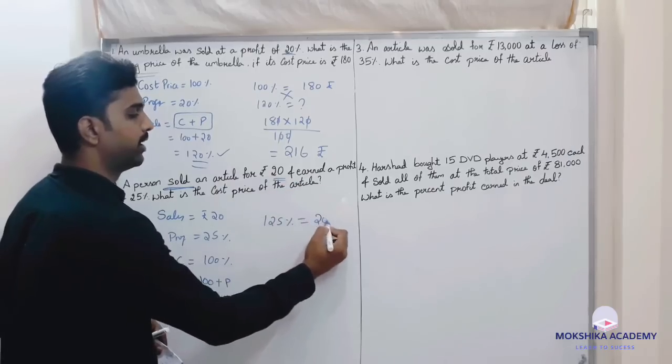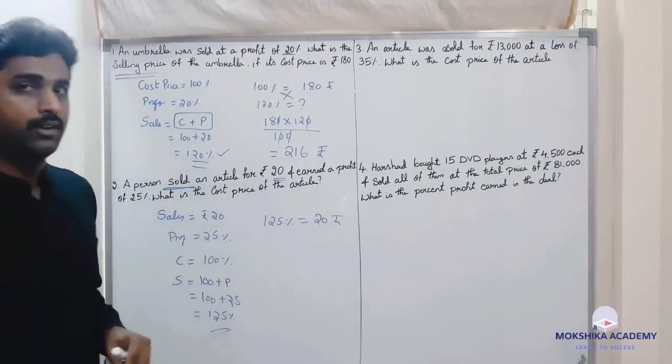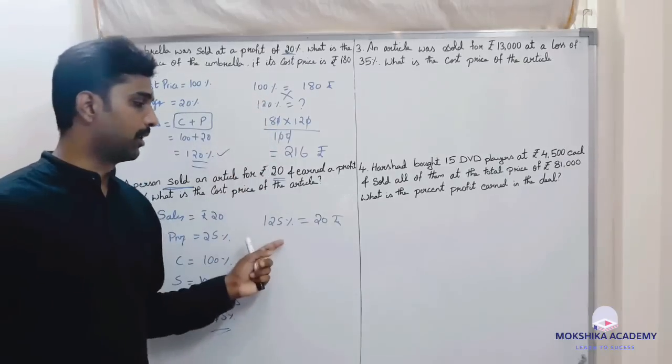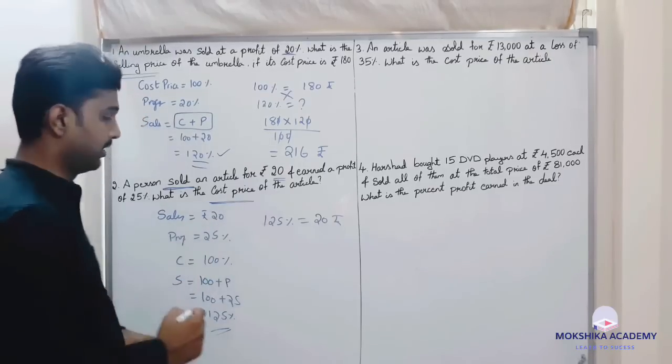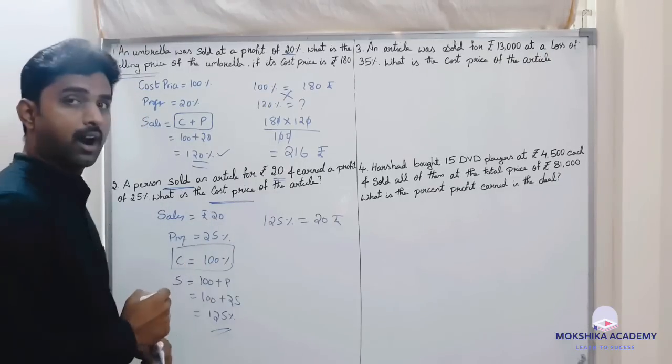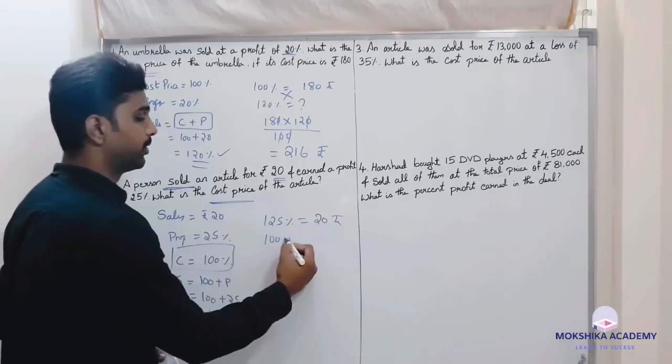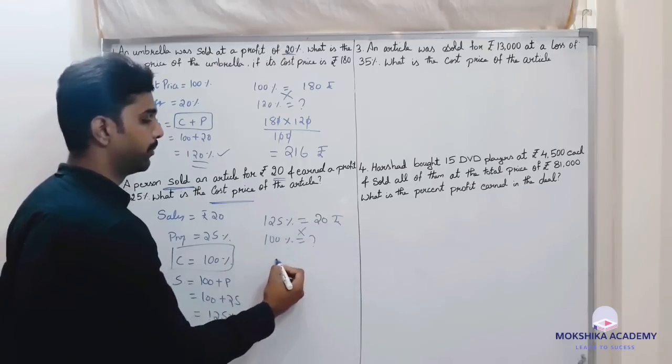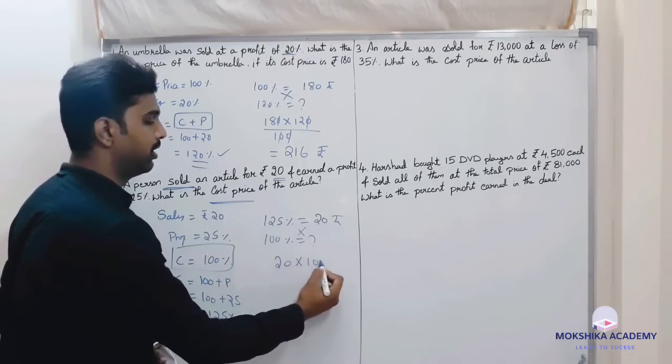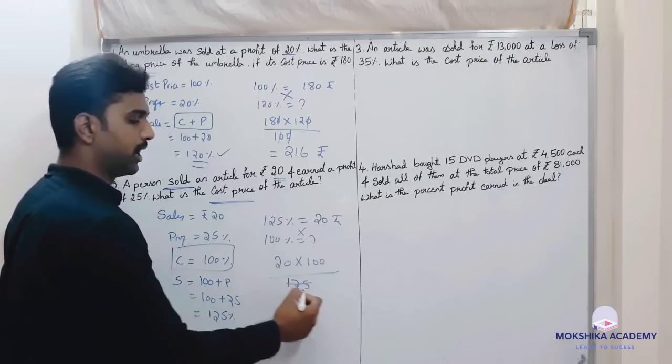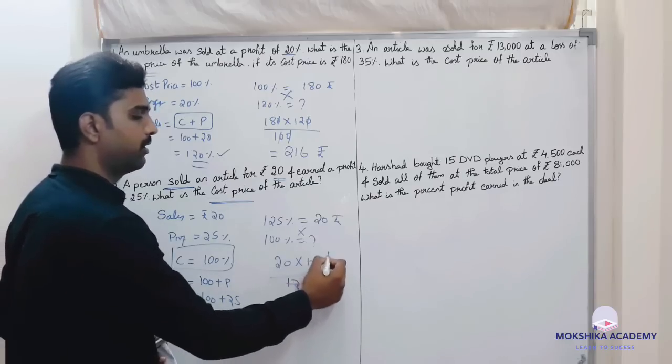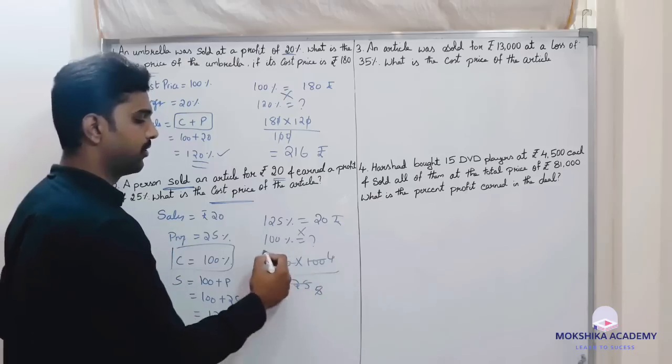125 percent is how much? Rupees 20. Okay students, sales in the previous problem, cost in this problem. Sales is the name. Cost price is still there, hundred percent. So hundred percent is equal to question mark. Cross multiply: 20 into 100 divided by 125.